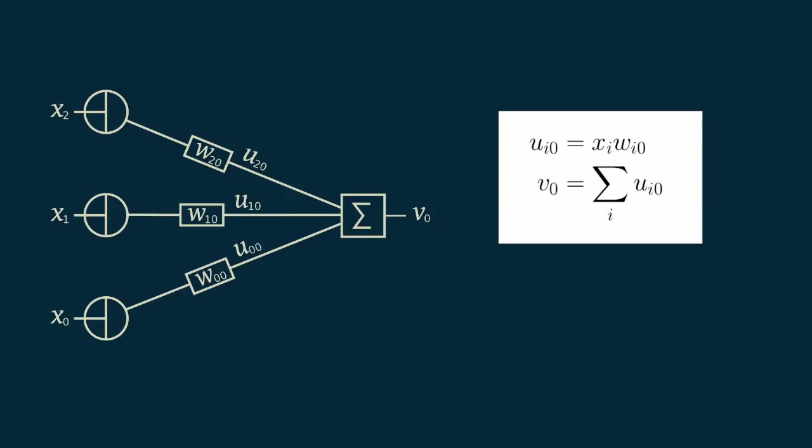There's no reason we have to limit ourselves to just one input variable. We can add an additional one. Now here we have an x sub 0, an x sub 1, and an x sub 2. We draw an edge between x sub 2 and our summation with the weight w sub 2,0. x sub 2 times w sub 2,0 is again u sub 2,0, and all of our u's get added together to make a v sub 0.